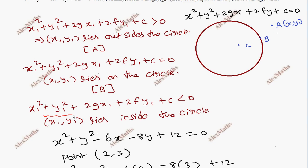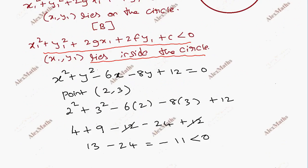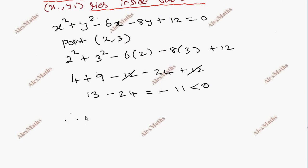The point substitutes for less than 0, and the point lies inside the circle. Therefore, point (2,3) lies inside the given circle.